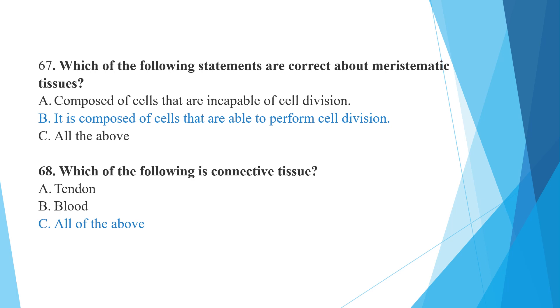Which of the following is connective tissue? Tendon and blood are both examples of connective tissue. Option C is correct — all of the above.